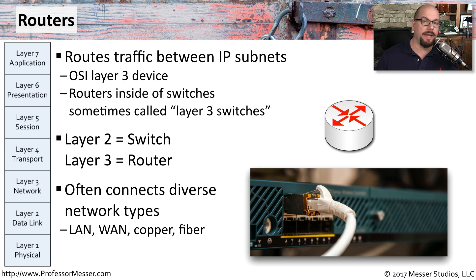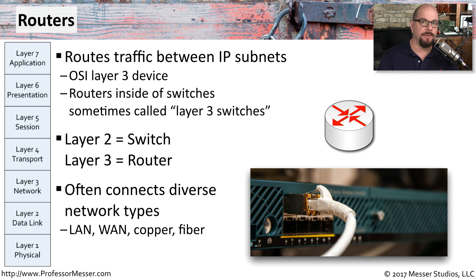We might have ethernet on the inside of our network and some type of wide area network on the outside. Routers might also forward traffic from one IP subnet running on copper to a different IP subnet that might be running on fiber.